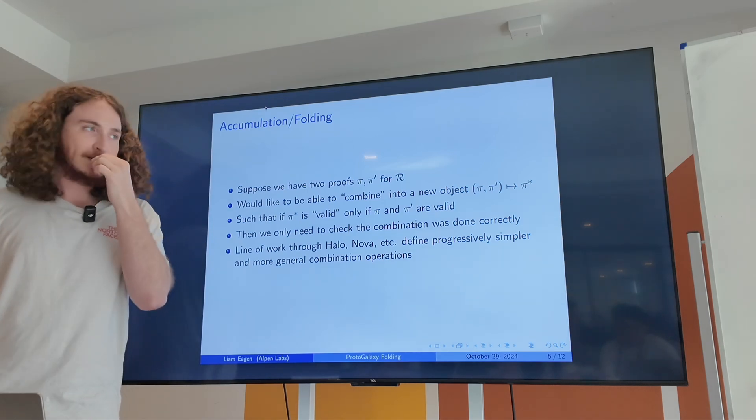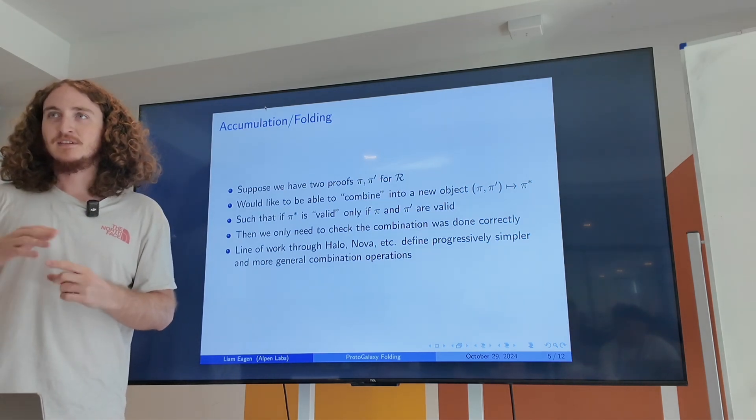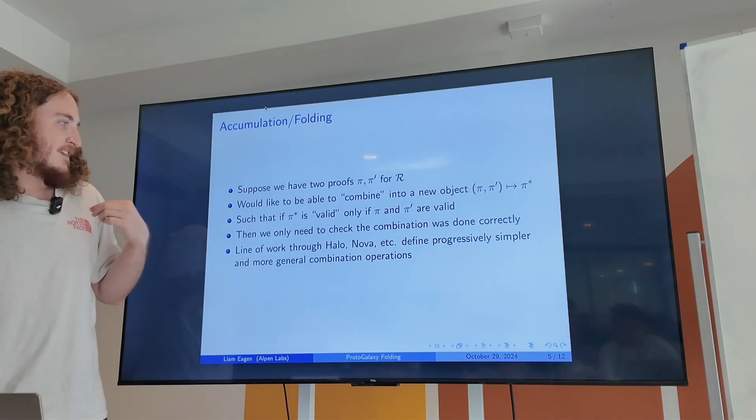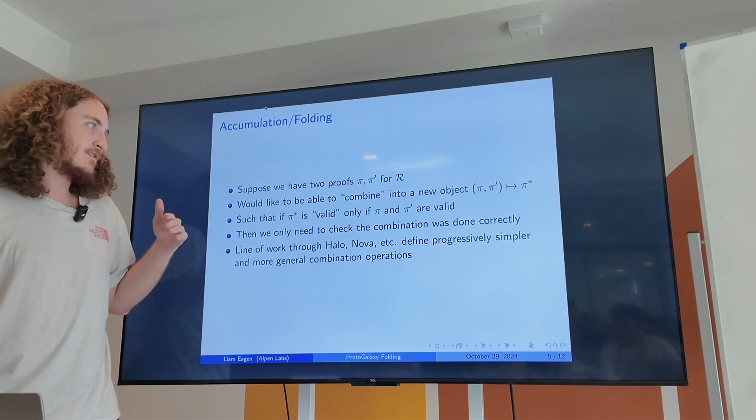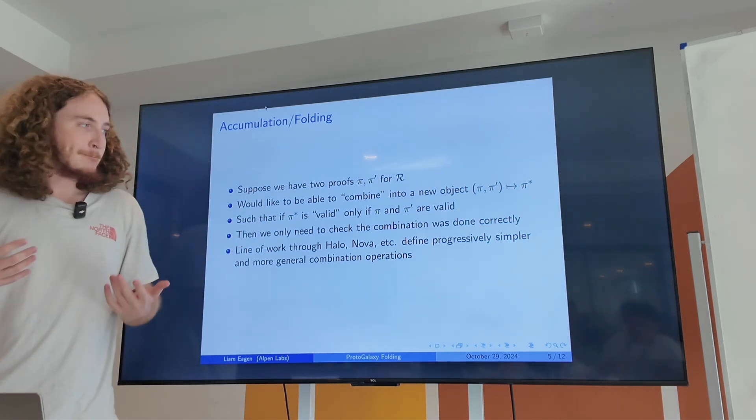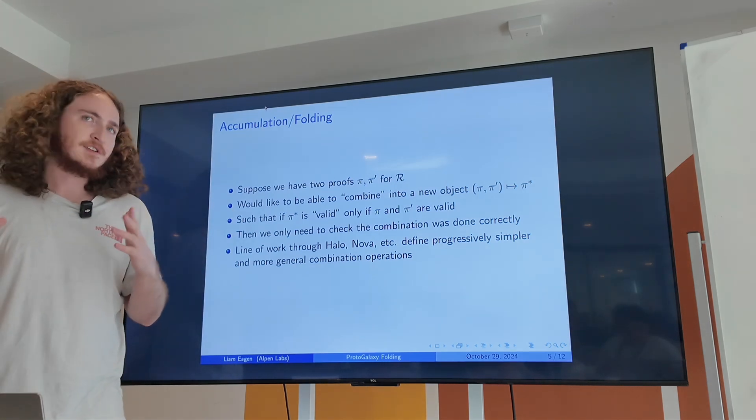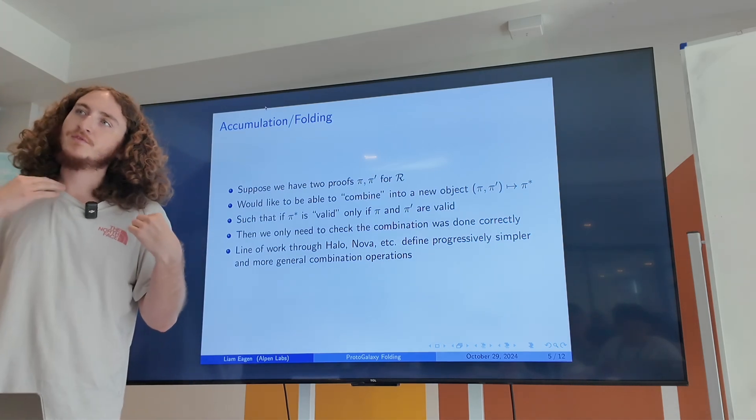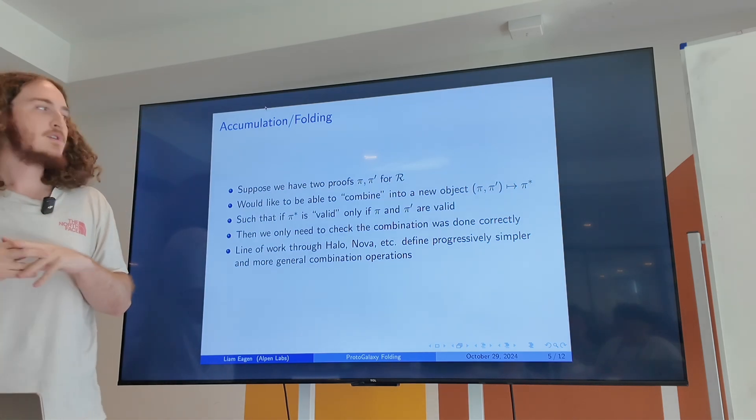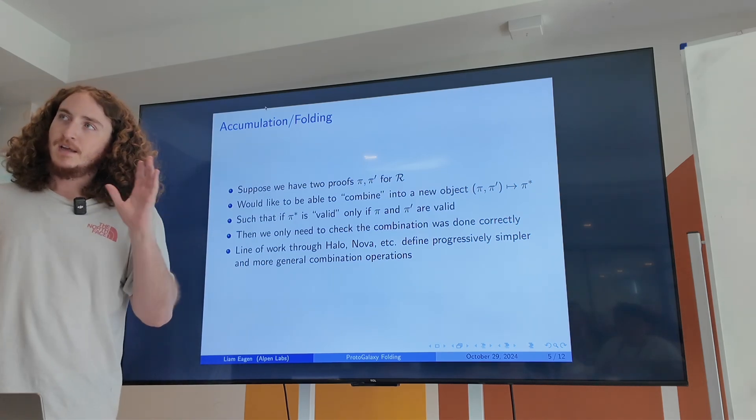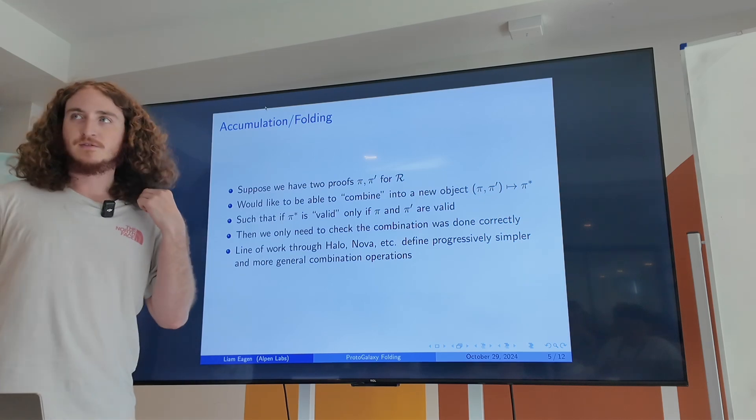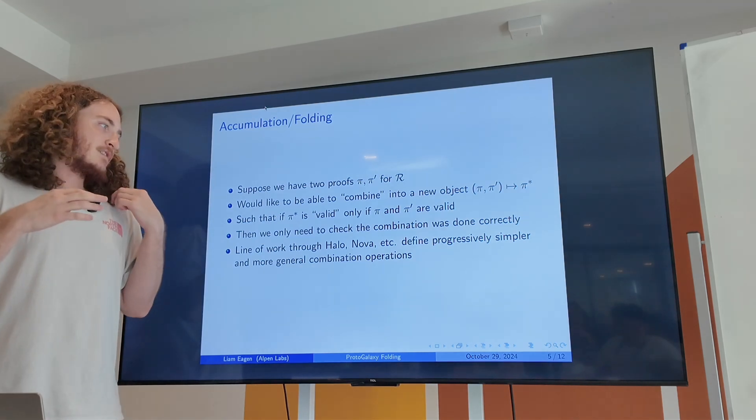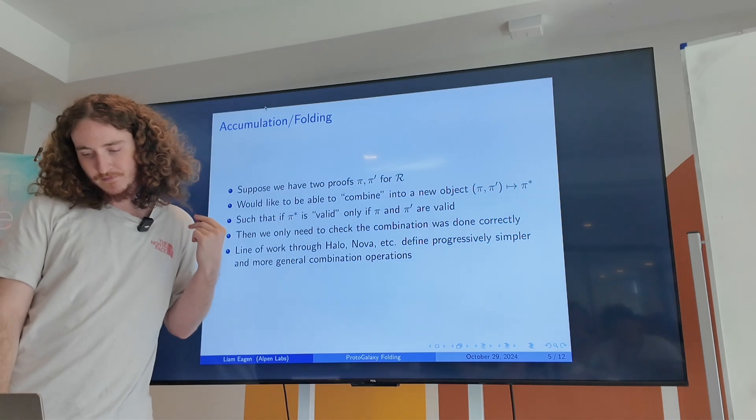There's tons of different folding schemes: Hypernova, Protostar, Protogalaxy, etc. And as you go forward in time through these papers, the combination operation becomes simpler to check and includes larger classes of relations.